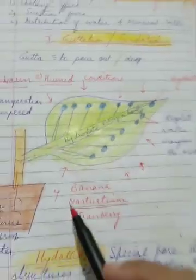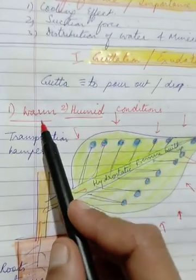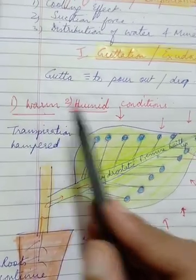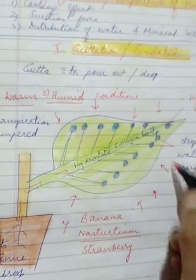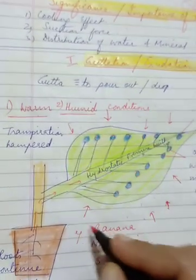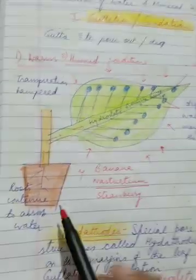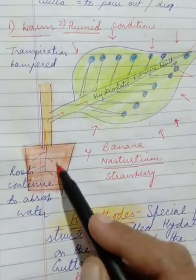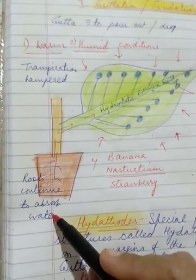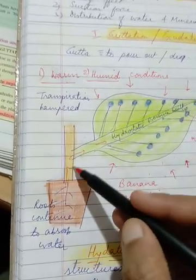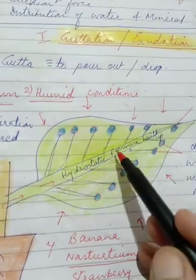Now there are two requirements for guttation to occur. Number one, the environment should be warm and humid. Remember the humidity means moisture content in the atmosphere. There's a lot of moisture in the atmosphere to make it humid, and also warmth. But at the same time, roots of these plants continuously are absorbing water. This water is continuously coming in, building up a pressure which is called hydrostatic pressure.